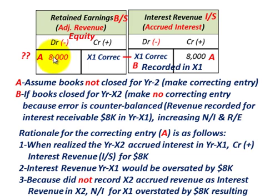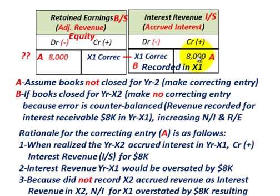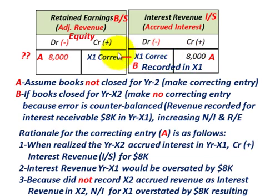We'd be reducing retained earnings by $8,000. This looks a little unusual, but with this counterbalancing error, because we recognized the interest revenue a year earlier than we were supposed to, we have to remove it from retained earnings. By crediting interest revenue by $8,000 in year X2, remember this interest revenue is going to flow back into retained earnings and increase it — taking out the $8,000 that was recognized early and bringing it back in through year X2's closing process.